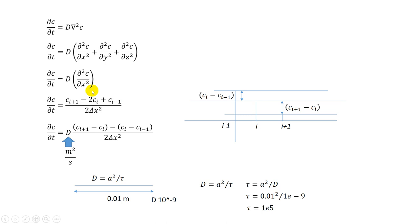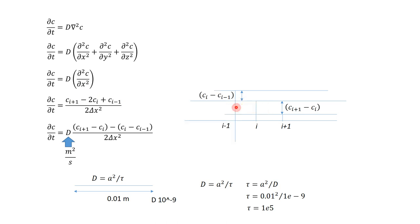We are concerned about the numerator. This discretization can be rearranged as (c_{i+1} − c_i) − (c_i − c_{i−1}). From the original 2c_i we take one c_i to form the first difference, and the remaining −c_i inside the parenthesis with a negative sign turns the minus into a plus, giving us the rearranged form.